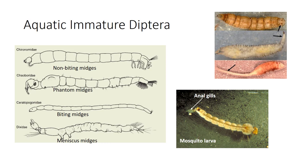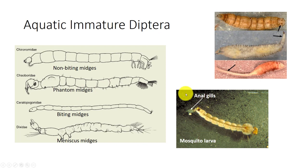Aquatic larvae are typical of many Diptera. There may be over 10,000 aquatic species in several families, including non-biting midges, biting midges, mosquitoes, and blackflies. Dipterans are holometabolous and their larvae are commonly worm-like, with unsegmented prolegs. Some have sclerotized head capsules while others have more maggot-like heads. The larval tracheal system may be closed, using gills, or open with a variety of spiracular locations, including a terminal elongate respiratory siphon.